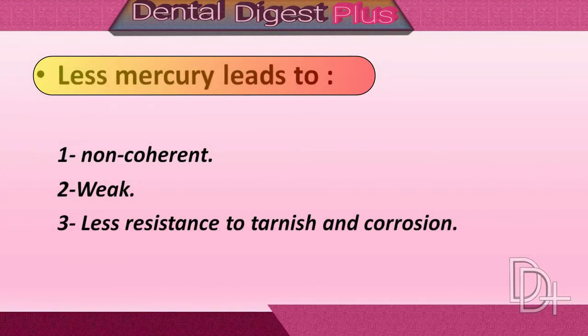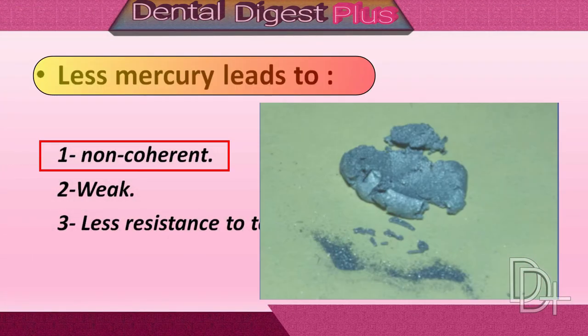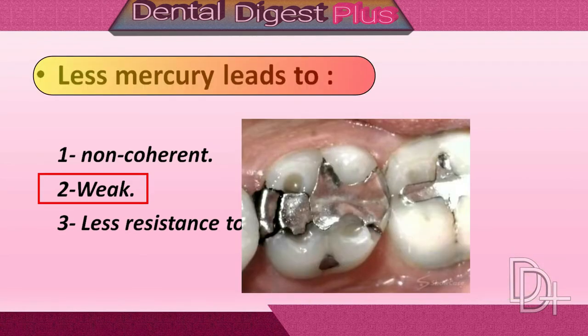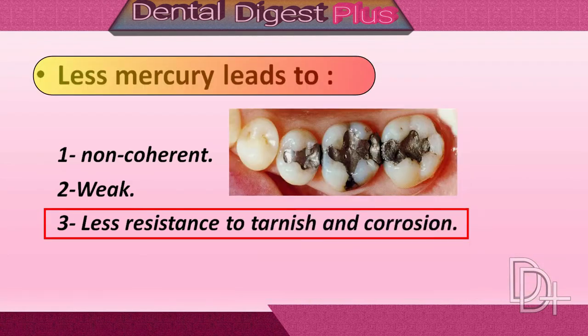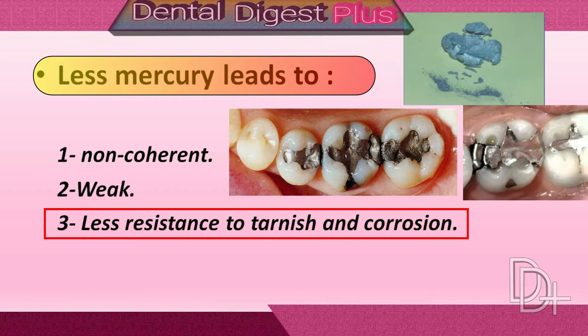Whereas less mercury in the restoration can lead to a non-coherent mass, weak restoration, and a restoration with less resistance to tarnish and corrosion. All of these can cause failure of the restoration.